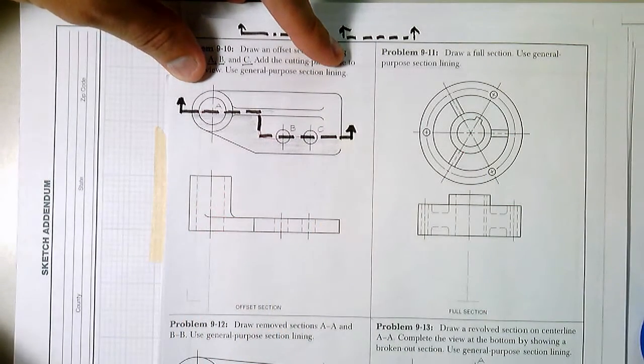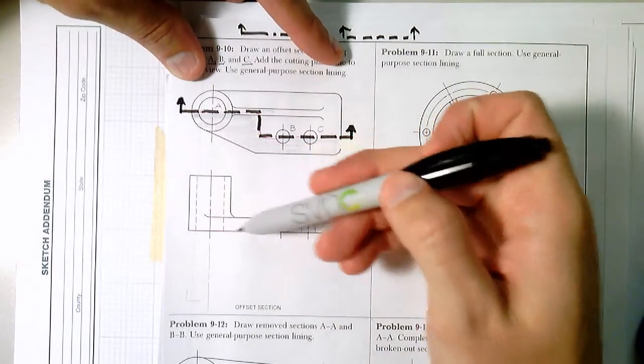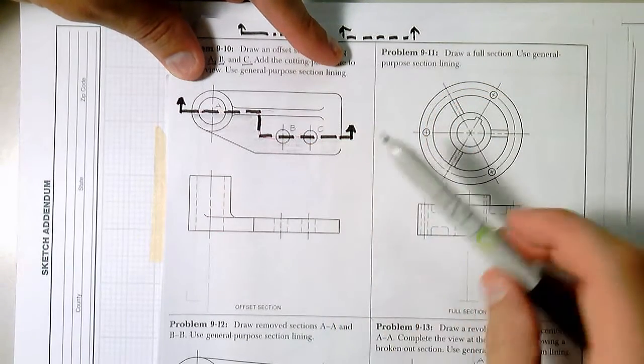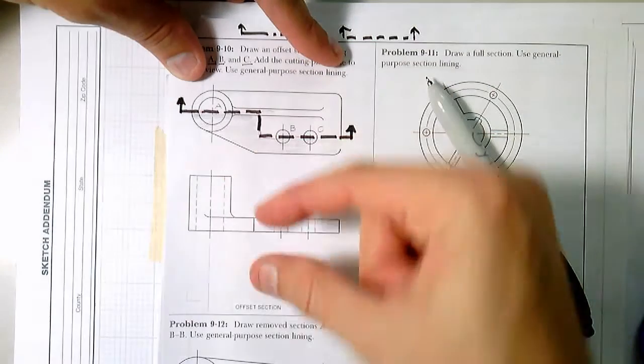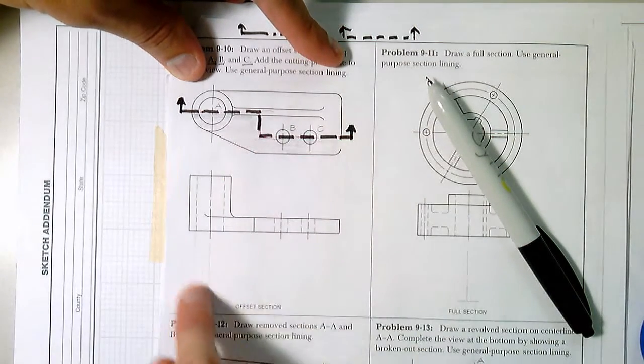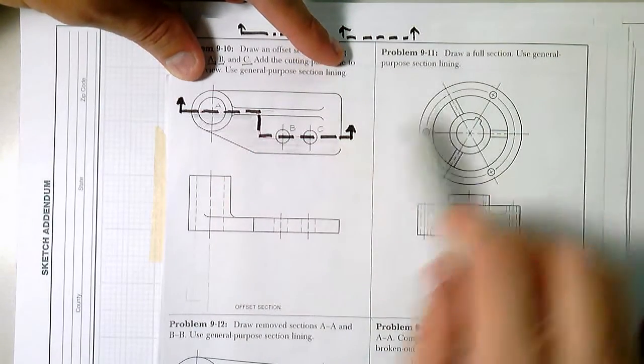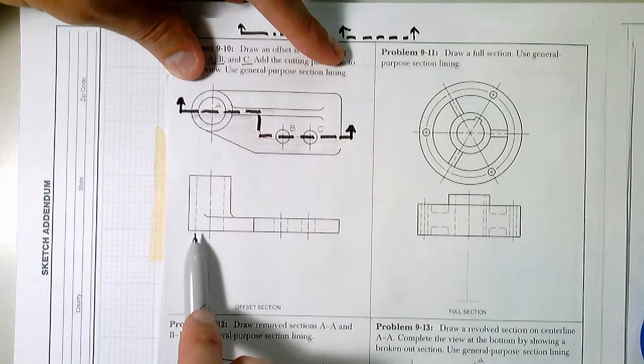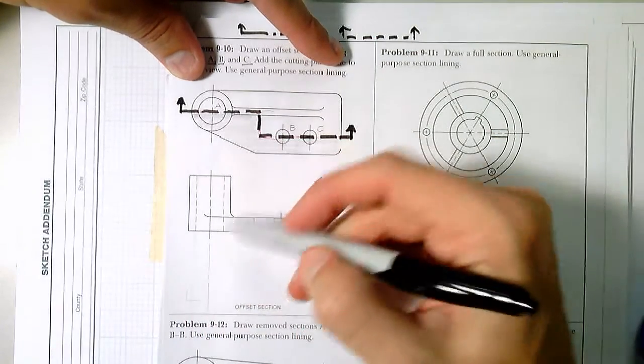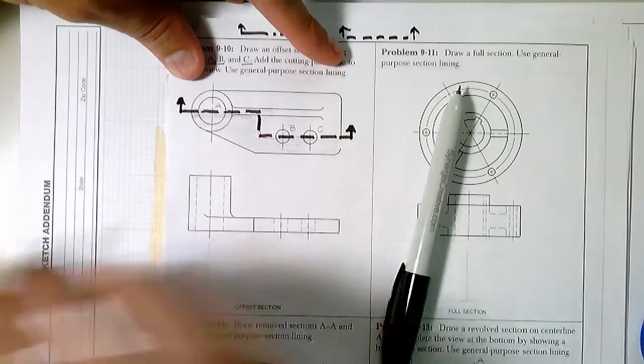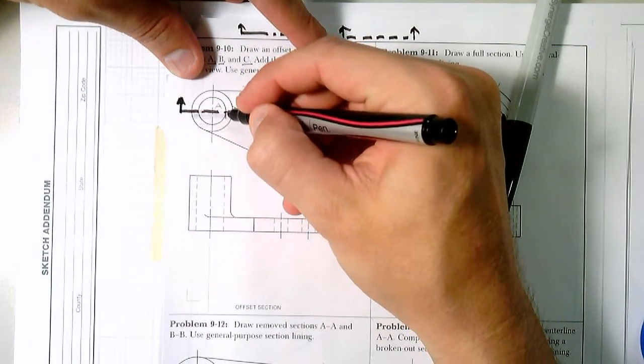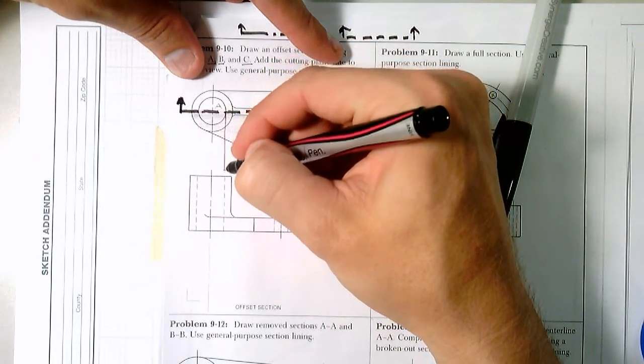So that means we're going to start looking at our side view. This is our side view of that object. And we've got to take information from the side view and place it down here on the bottom view to inform our section. Because if you look at our side view, we've got hidden lines that project right from the inside of this object.